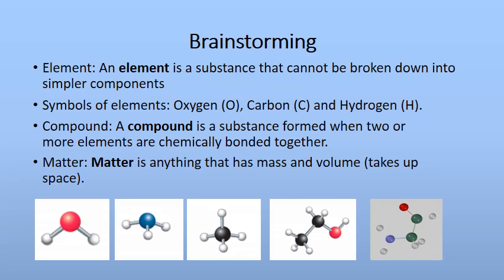Before starting this lecture I want you to revise some terms already covered in class 6. The first term is element. An element is a substance that cannot be broken down into simpler components. Elements can be represented by different symbols — the symbol of oxygen is O, carbon is C, and hydrogen is H. The next term is compound: a substance formed when two or more elements combine chemically.